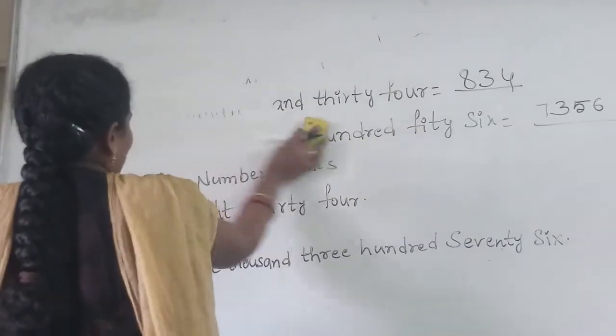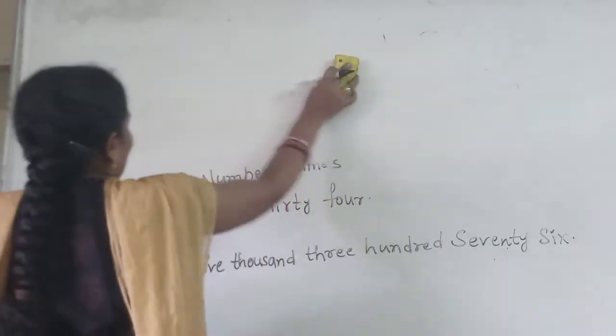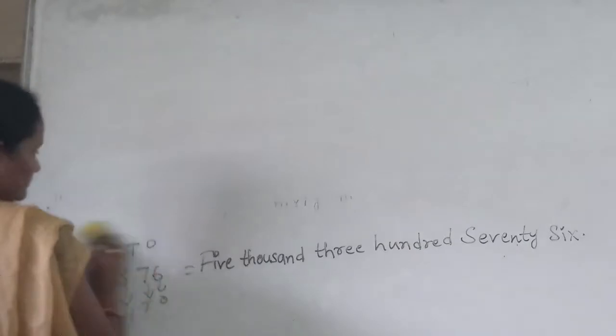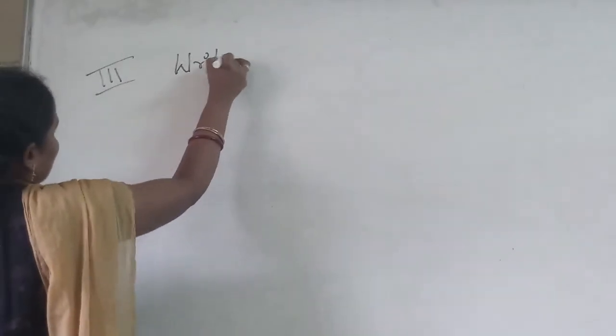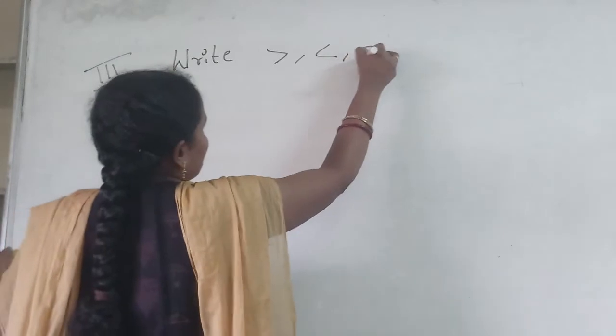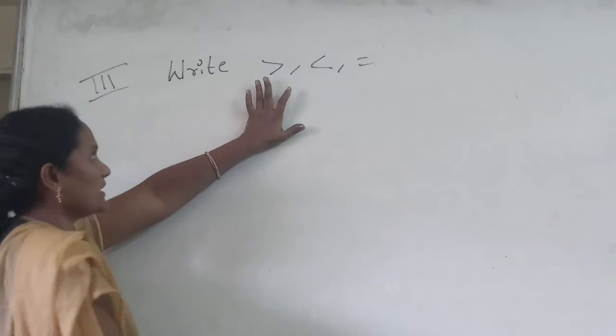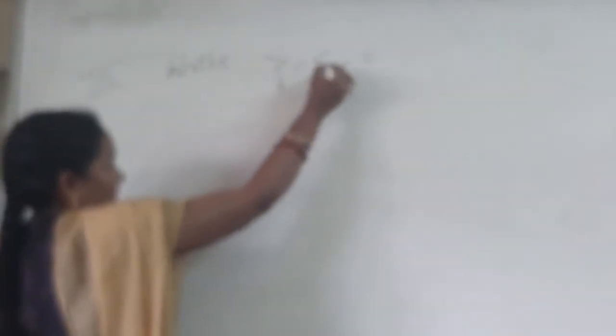What is our next topic? Any idea? Do you know these symbols? Some of you know them, some don't. Now first, how do we read these symbols? How many symbols are there? Only two symbols. One is the equals sign — you know this one. But you may not know how to read the other symbols.